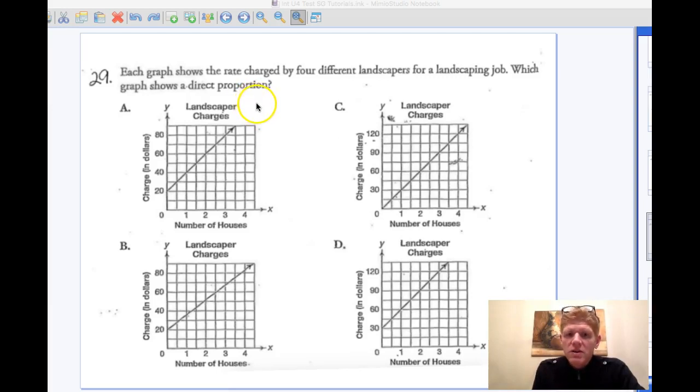And in this case, we need to remember two things. One, that a direct proportion passes through the origin. And number two, that it makes a straight line, it's linear. So it has to be both those things to be a direct variation.